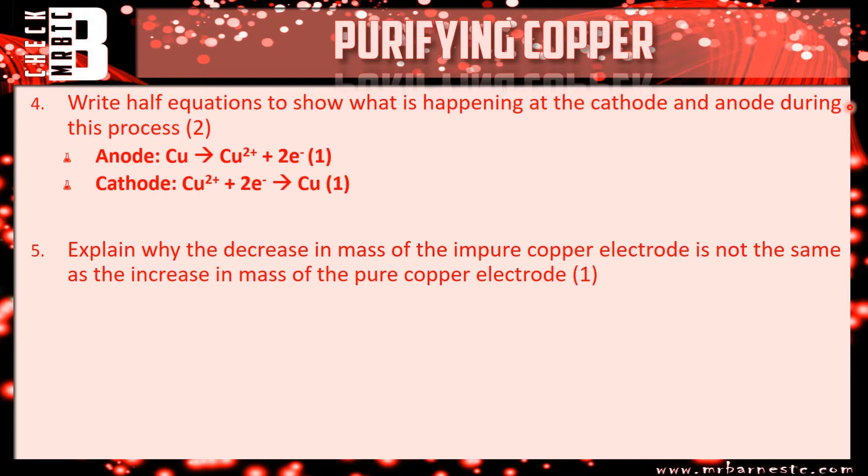And then finally, question five for one mark, explain why the decrease in mass of the impure copper electrode is not the same as the increase in mass of the pure copper electrode. And that is because you have impurities or sludge forming at the bottom of the beaker.